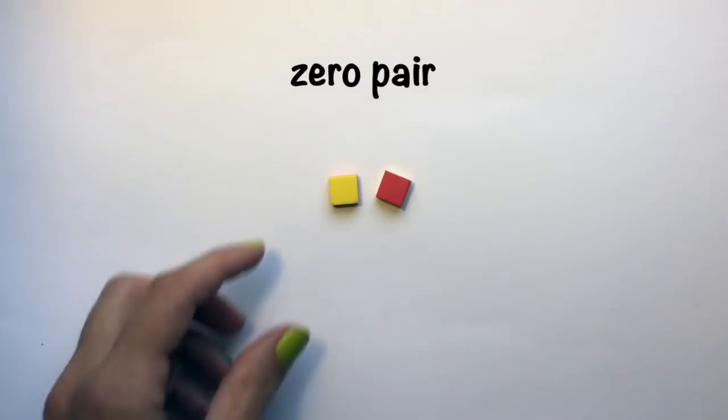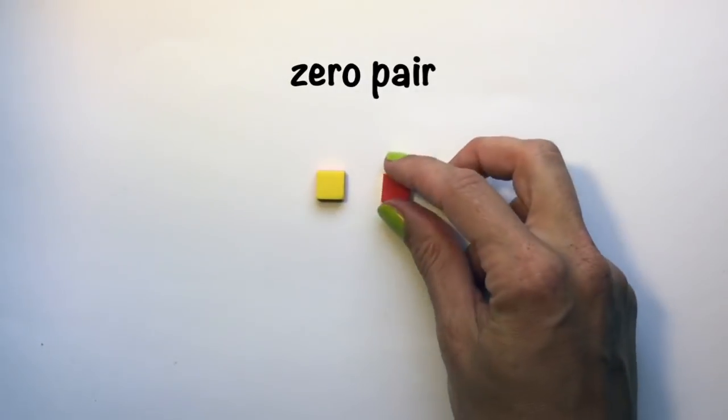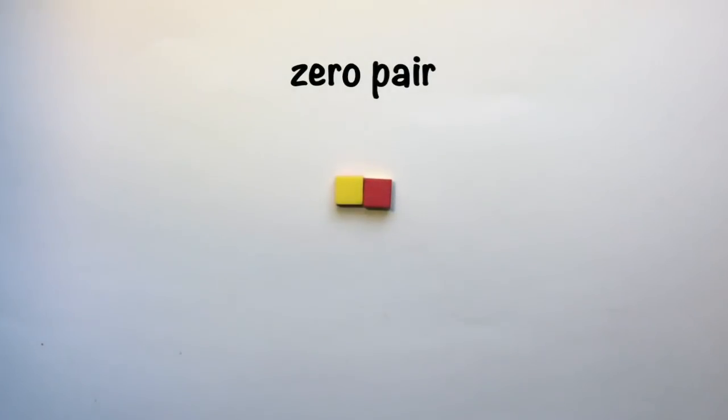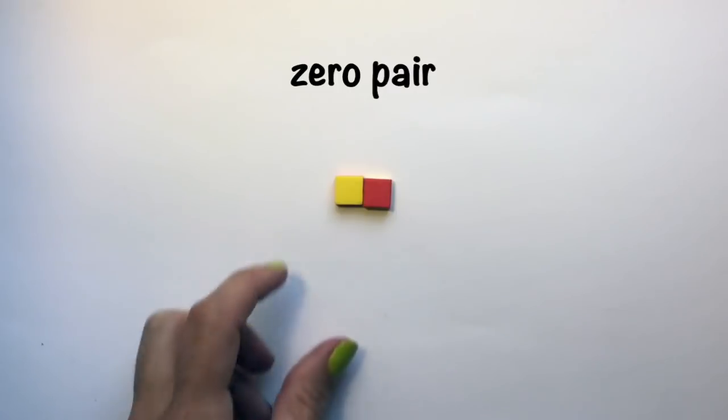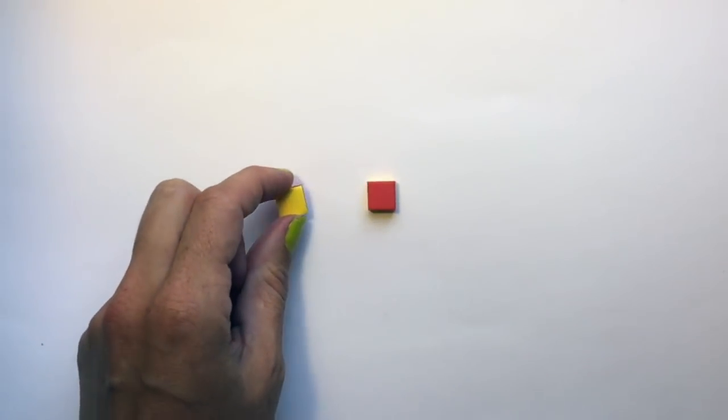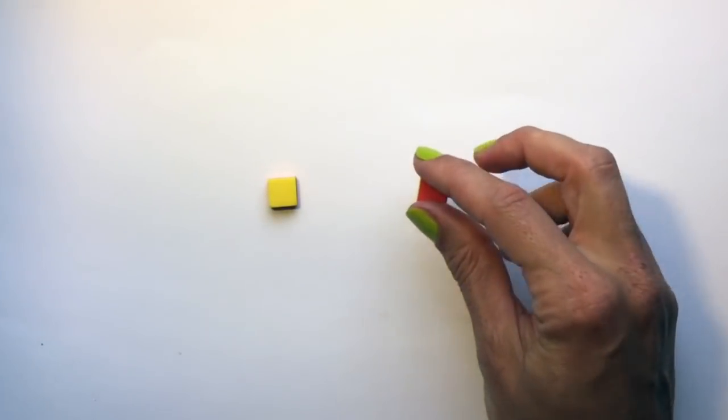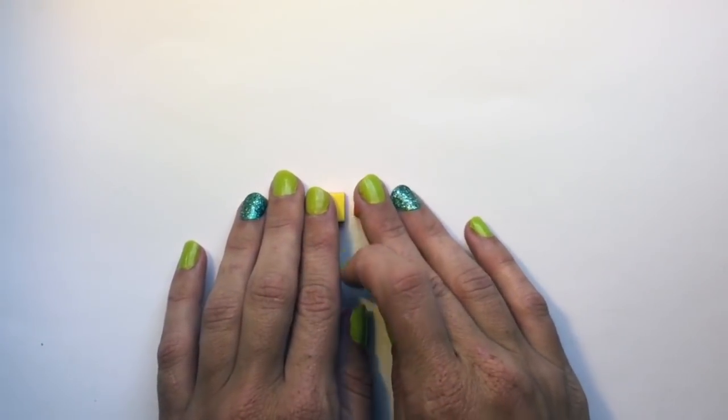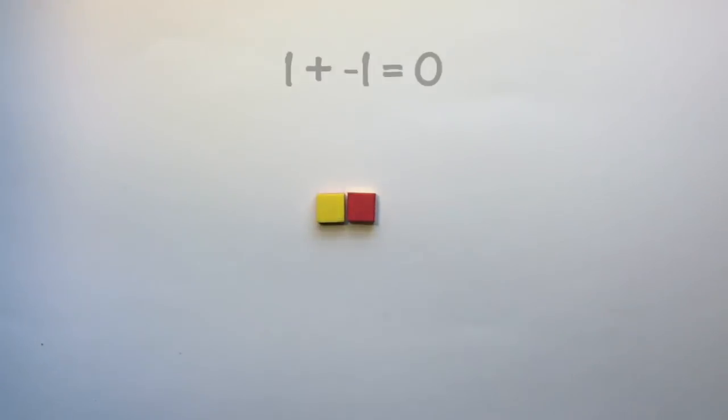A zero pair is when a positive tile and a negative tile are paired together to create a zero pair situation. What this means is this tile is positive one and this tile is negative one. So together, positive one plus negative one is going to equal zero.